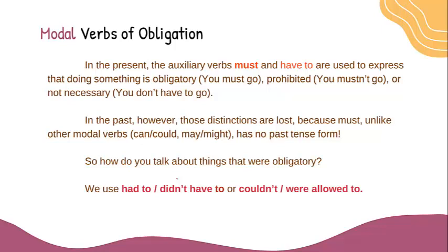So how do you talk about things that were obligatory? We use 'had to,' 'didn't have to,' 'could' or 'couldn't,' and 'were allowed to' to talk about obligations in the past.